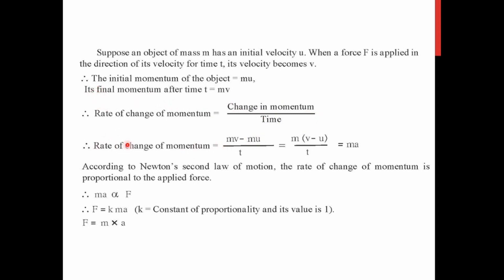The rate of change of momentum is (final momentum − initial momentum) / t, which gives m(v − u)/t. Since (v − u)/t is acceleration, this becomes mass × acceleration = ma. According to Newton's Second Law, the rate of change of momentum is proportional to the applied force, so ma ∝ F. The constant of proportionality equals 1, giving us F = ma — force equals mass times acceleration. This is the fundamental formula of Newton's Second Law.